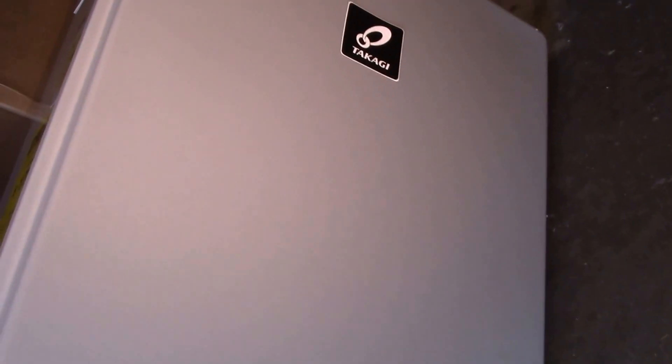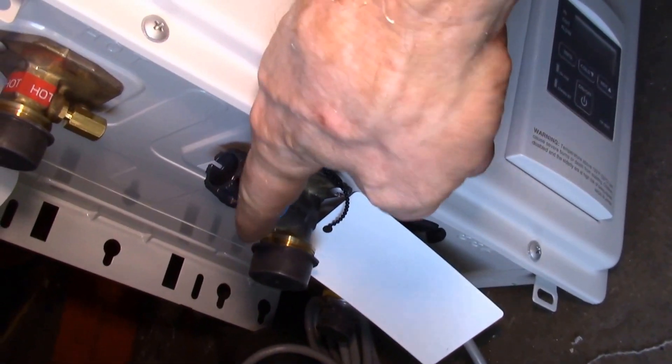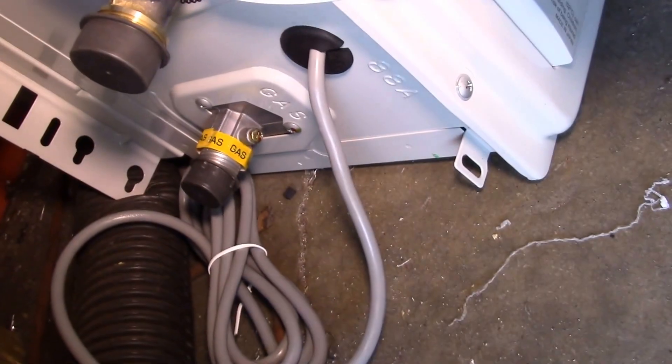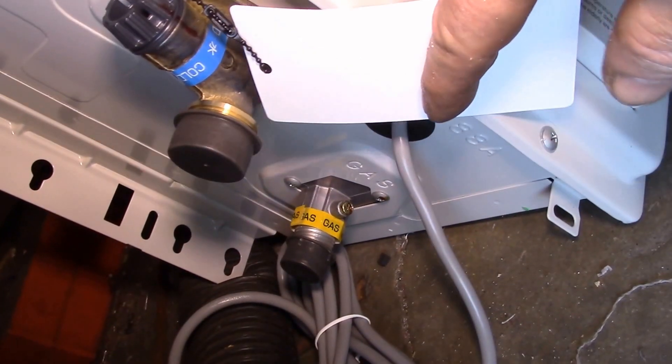Good afternoon YouTube, the tankless water heater came in today, just checking it out here. See hot and cold water, there's your water filter, that's the condensate drain, and then down on the bottom you got your power cord.